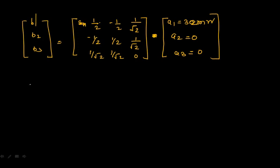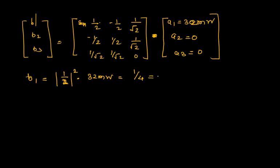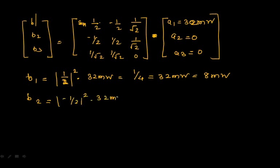For B1: B1 = (1/2)² × 32 mW = (1/4) × 32 mW = 8 milliwatts. Note that the scattering coefficients must be squared first since power is proportional to V²/R. Similarly for B2: B2 = (-1/2)² × 32 mW = (1/4) × 32 mW = 8 milliwatts, since the other inputs are zero.